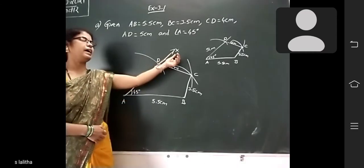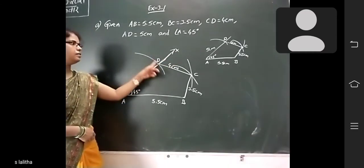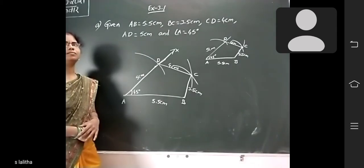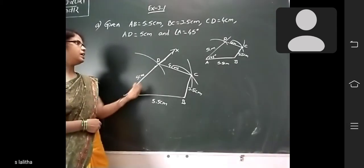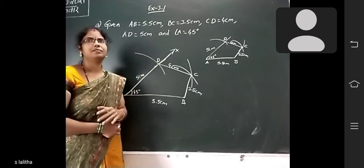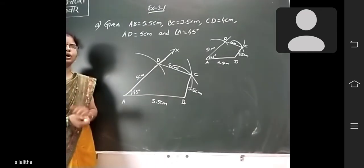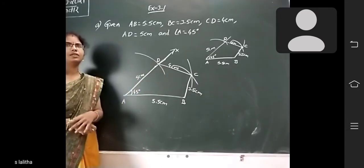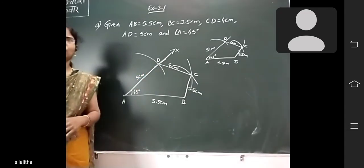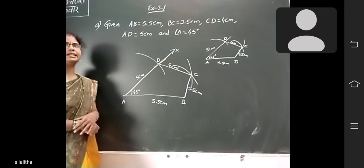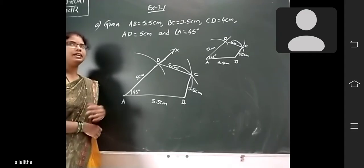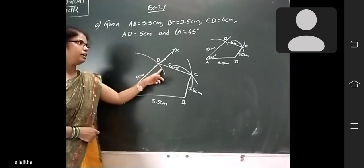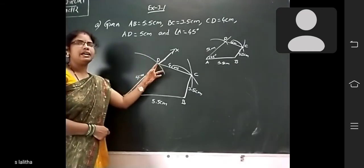The ray AX and the arc are intersecting at point D. Next step: with center D, draw an arc of radius 4 cm. The two arcs intersecting at point C.